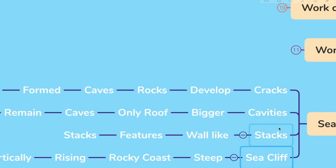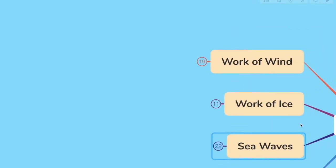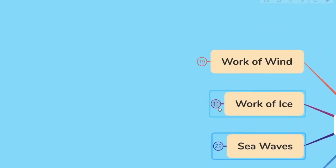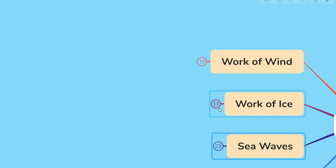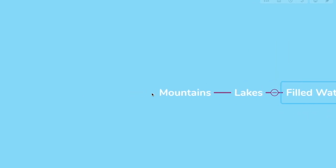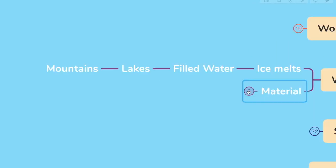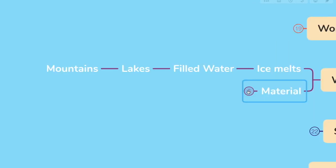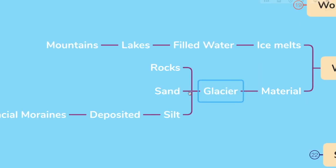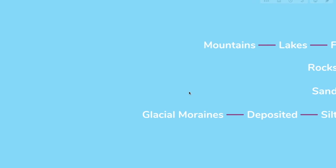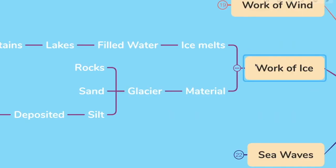Let's move forward and let's look at work of ice. Glaciers carve out deep hollows and when the ice melts, they get filled with water and become beautiful lakes in the mountains. The material carried by the glacier such as rocks, sand and silt gets deposited. These deposits are called glacier moraines.